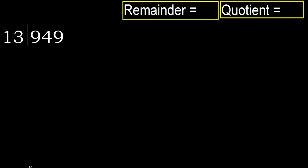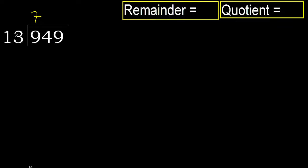949 divided by 13. 9 is less, therefore take the next two digits: 94. 13 multiplied by which number is nearest to 94 but not greater? 13 multiplied by 8 is greater, so multiplied by 7: 91, which is not greater.